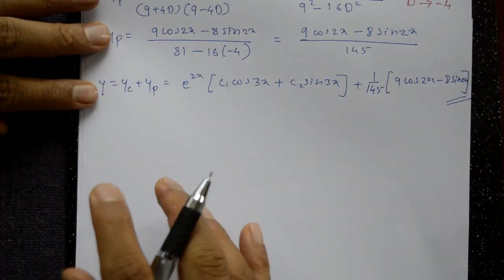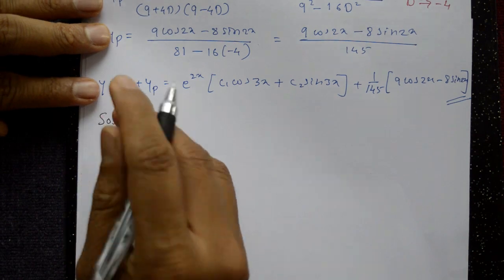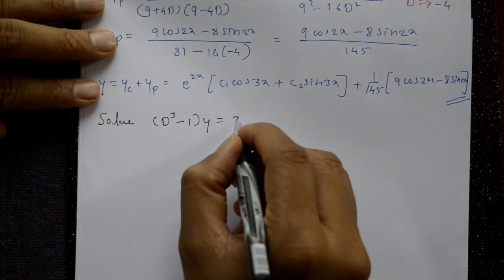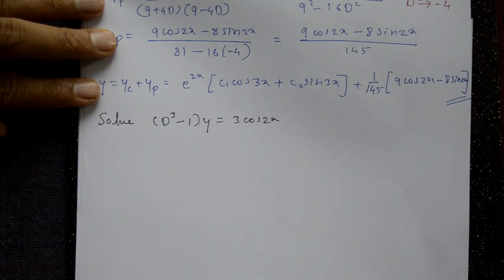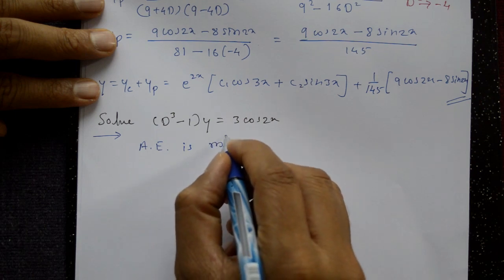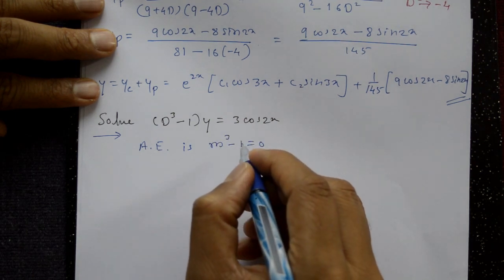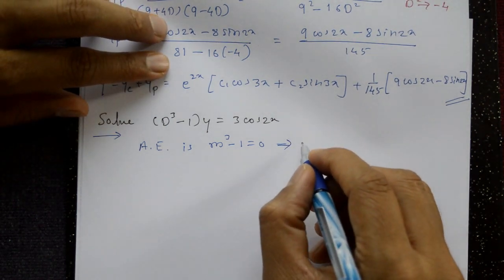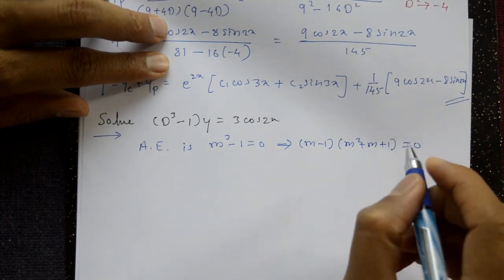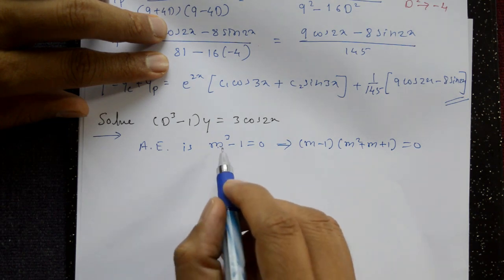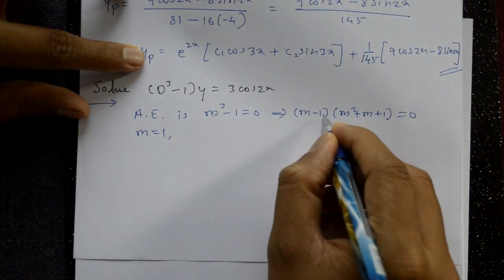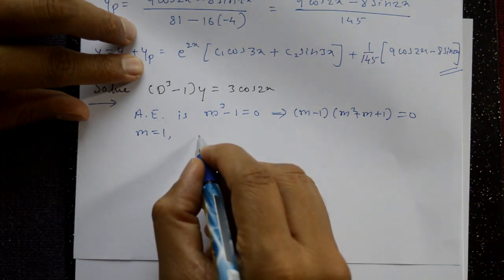Next example: Solve (D³ - 1)y = 3 cos 2x. Write the auxiliary equation directly: m³ - 1 = 0. Factoring using a³ - b³: (m - 1)(m² + m + 1) = 0. So m = 1 is one root, and m² + m + 1 = 0 is a quadratic.